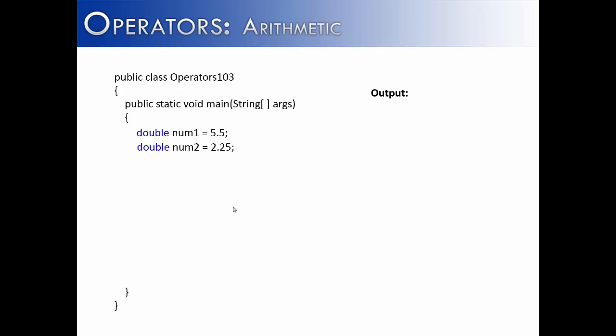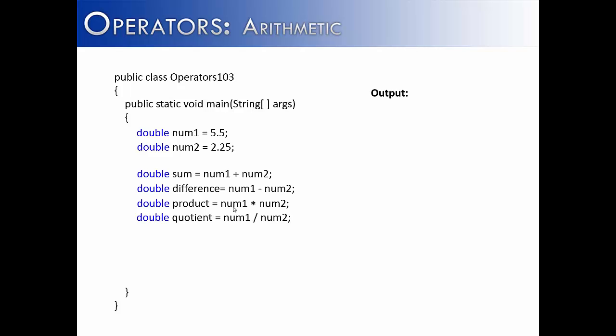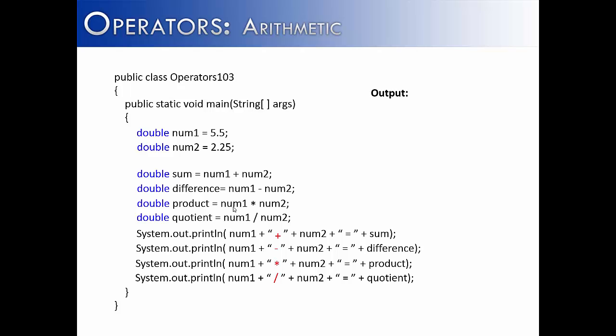Let's put all four operations together — add, subtract, multiply, and divide — getting the sum, difference, product, and quotient, and then print them out. This is what it would look like, and it would output these results: 7.5, 3.25, 12.3, 7.5, and 2.4444. You'll notice that on all of these we are doing real arithmetic as opposed to integer arithmetic, because all the values are real numbers and not integer values.